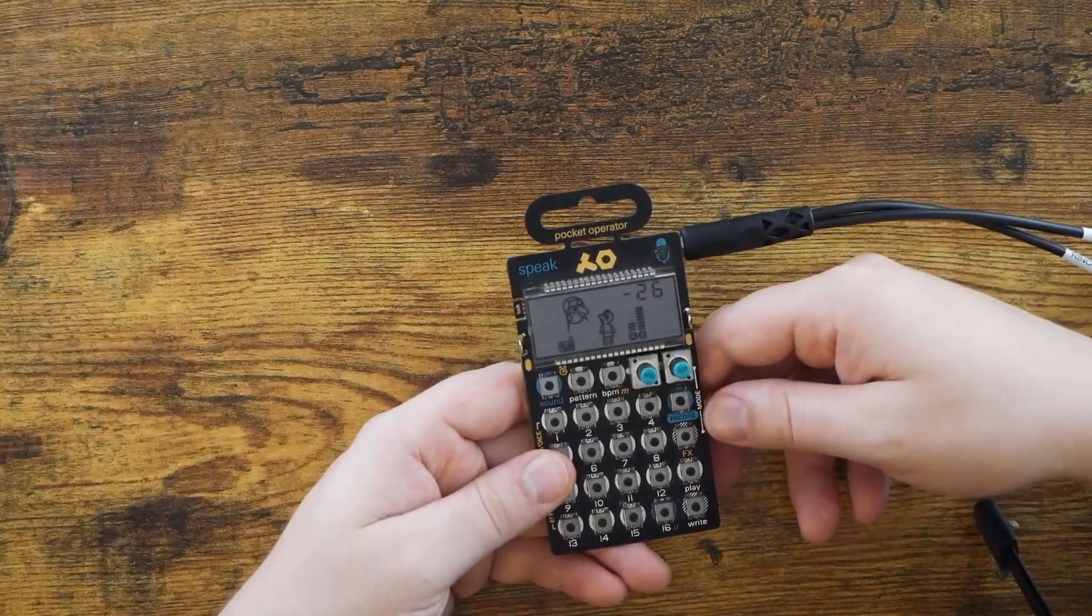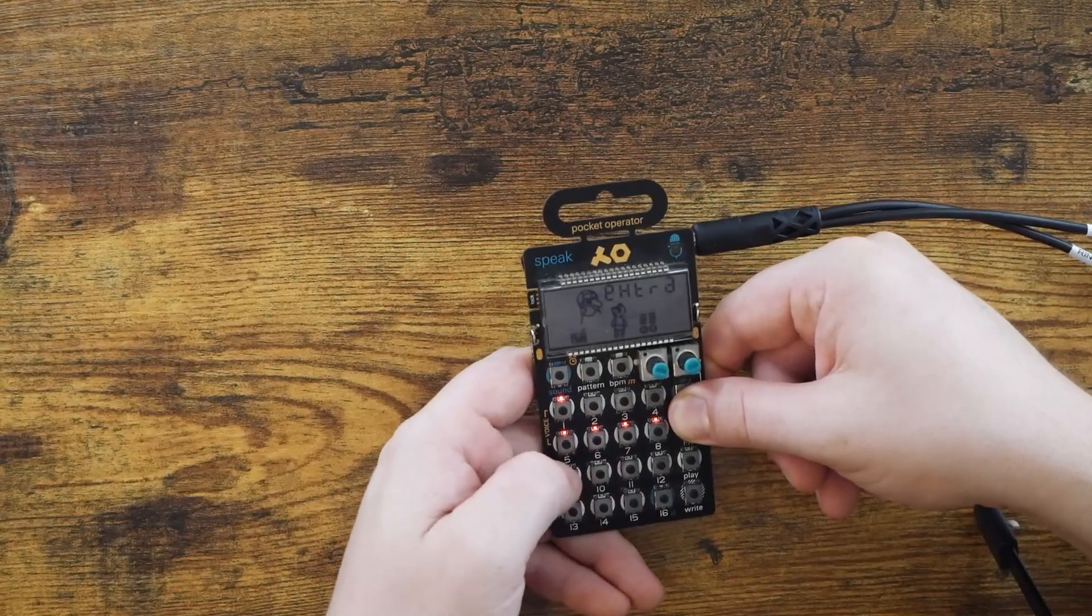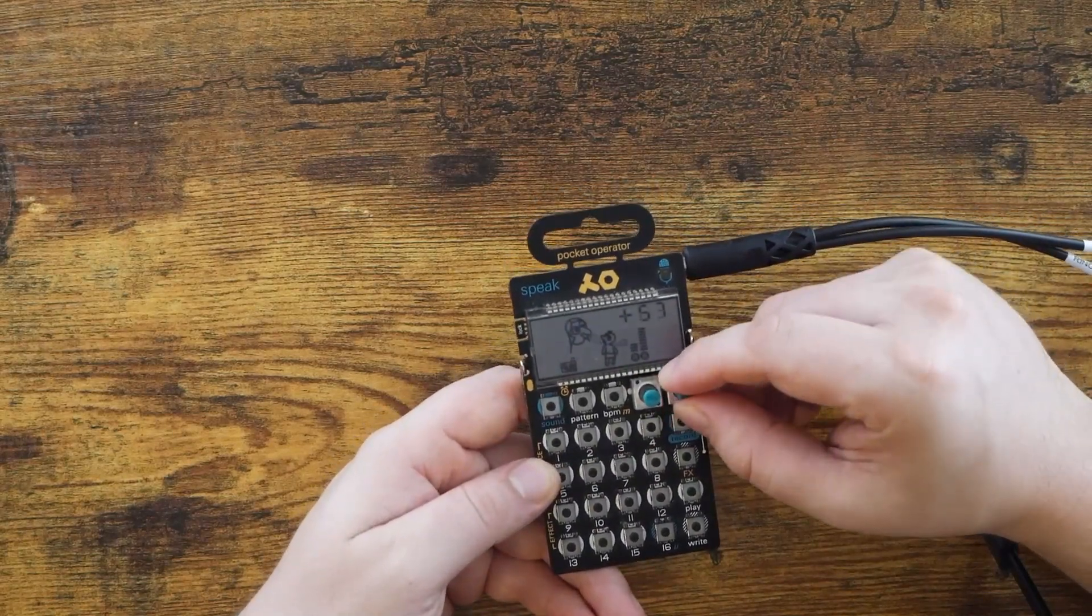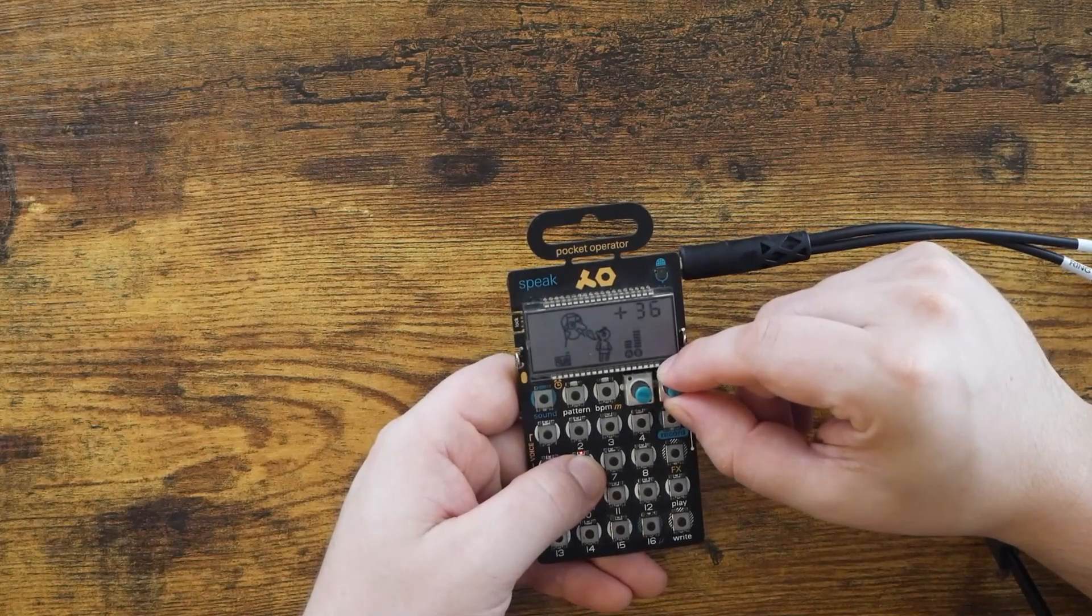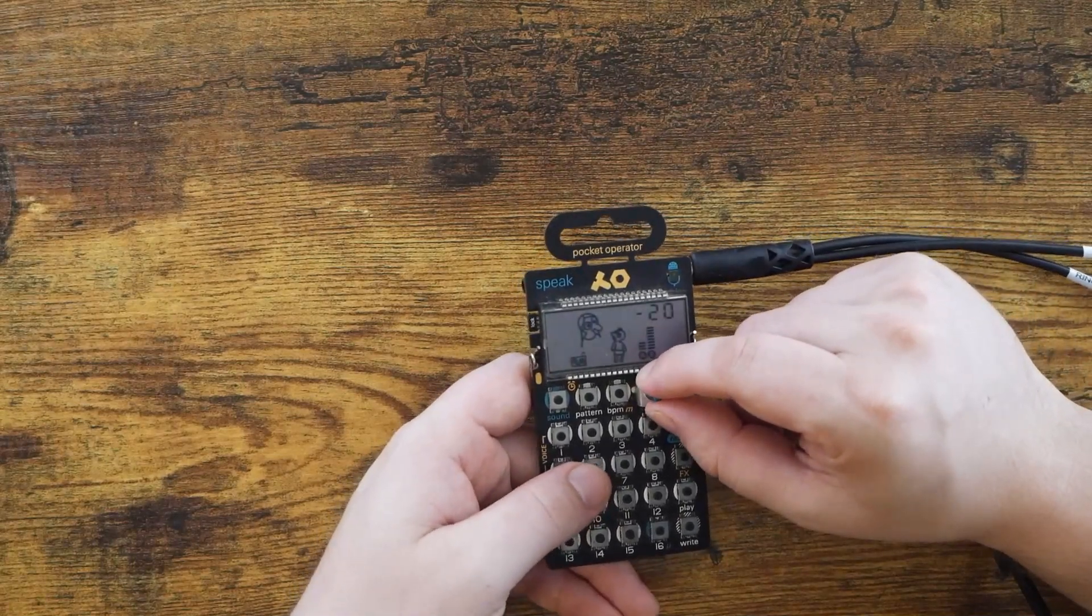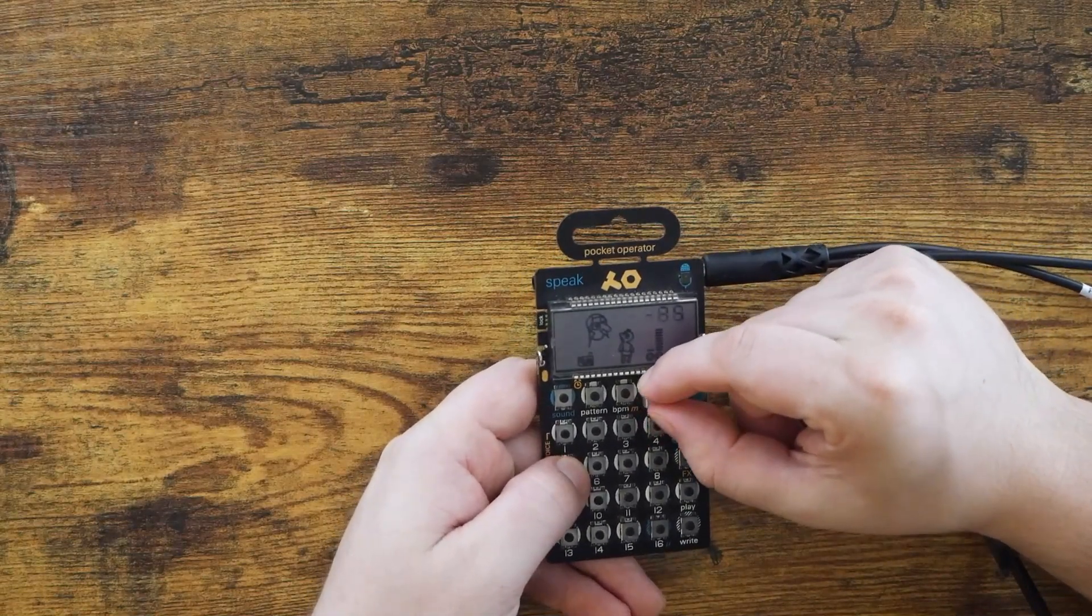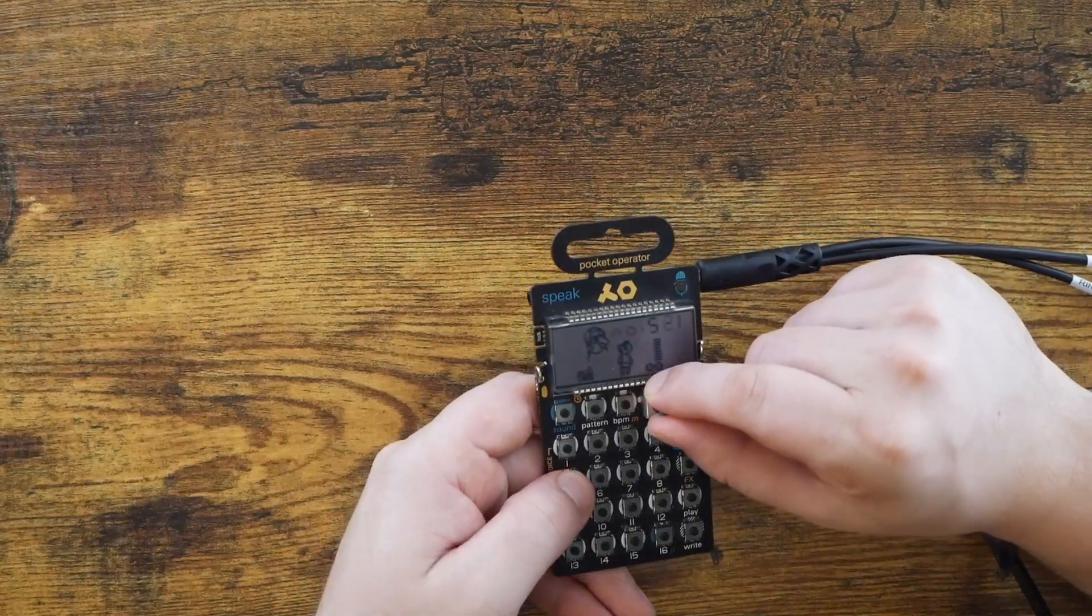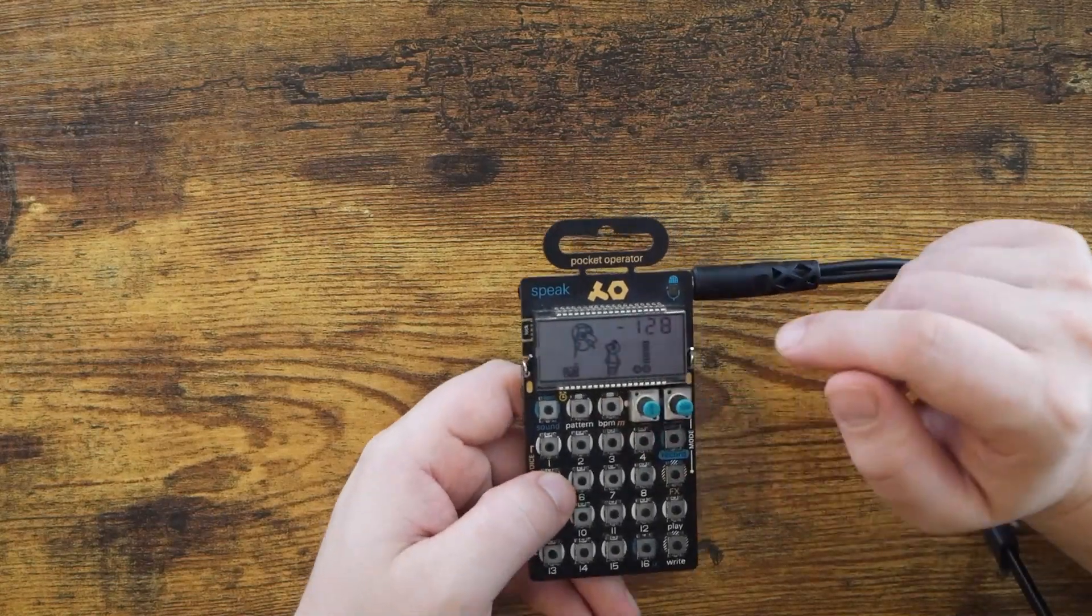So on the PO-35, if you hold effects and press record, then you get access to a bunch of different secret menus. In this case, I hold effects, press record, and go to number six. That's where I can actually adjust the overall volume of the sample itself. And that's with knob B. Then knob A actually allows me to control the amount of noise in the sample. You can actually completely take it out, as you can hear. I kind of like it without. Let's try it without.